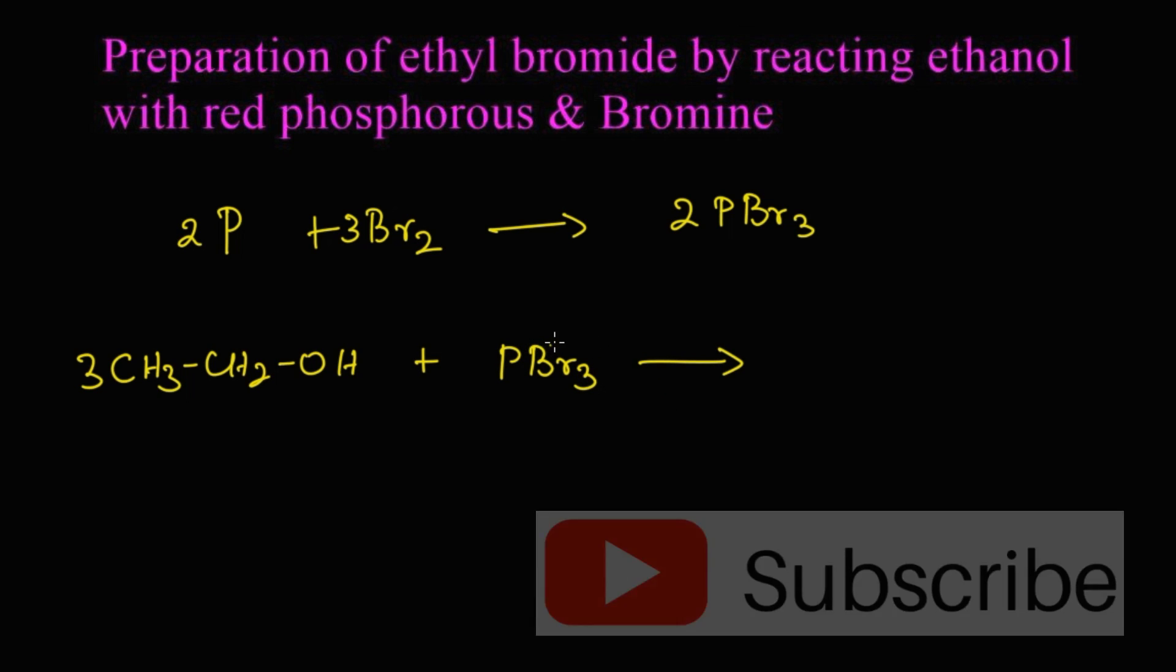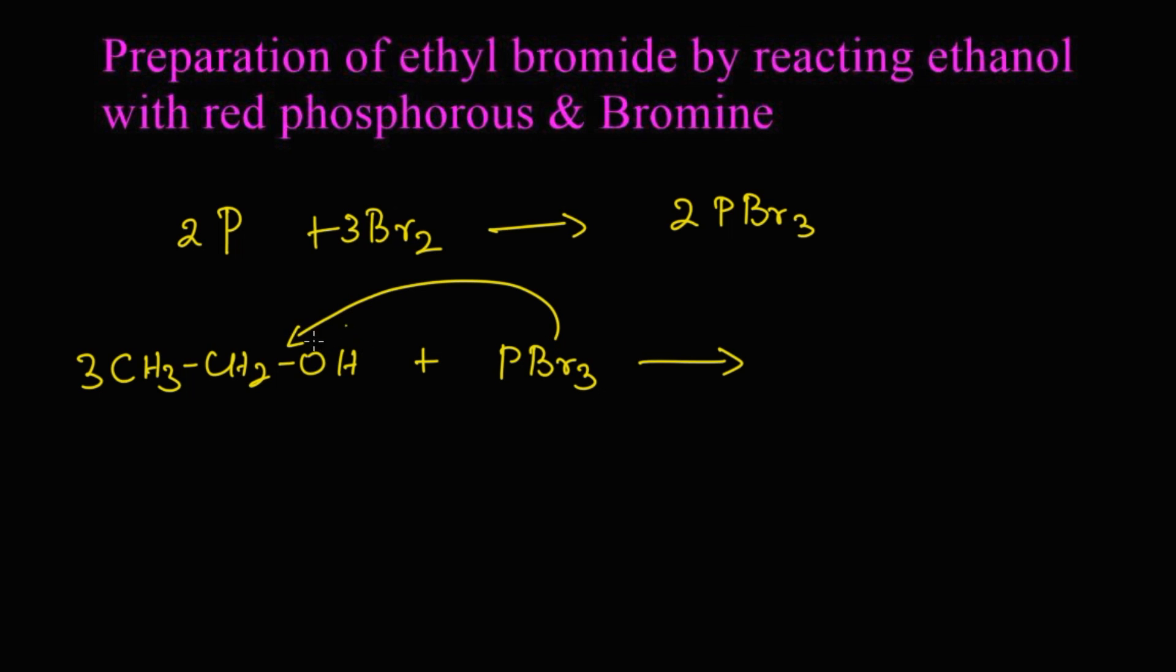What happens? Very simple. These three bromine will replace the three OH groups, so we get 3 CH3-CH2-Br, that is bromoethane. The remaining thing: three hydrogens here, three oxygens, and one phosphorous gives H3PO3, that is phosphorous acid.